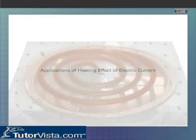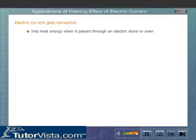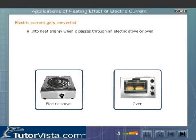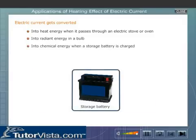Applications of Heating Effect of Electric Current. Electric current gets converted into heat energy when it passes through an electric stove or oven, into radiant energy in a bulb, and into chemical energy when a storage battery is charged.